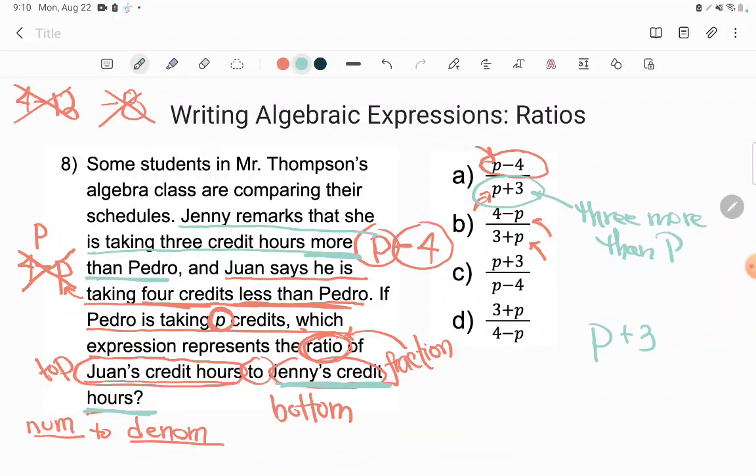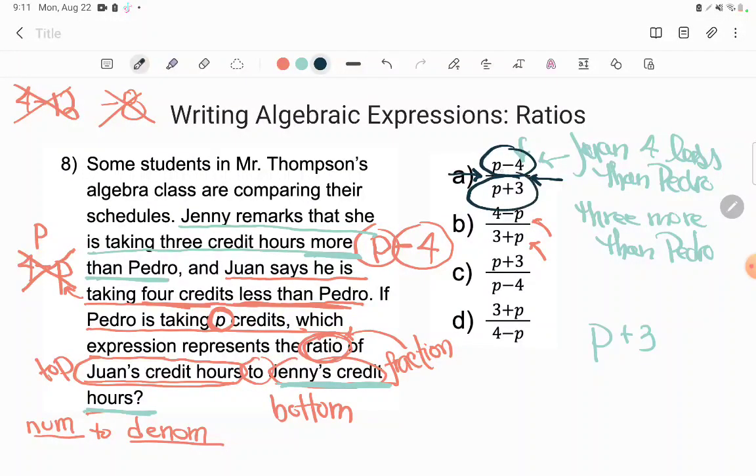And we can see there on the top in the numerator, there's Juan taking four less than Pedro. And see how I'm just reading this expression, I can read that P as Pedro. So Pedro's hours take away four gives me Juan. And Pedro's hours plus three more give me Jenny's. And so then this here is the ratio, the fraction of Juan's credit hours to Jenny's credit hours. All right, if you have any questions about this or any other GED math problem, be sure to drop it in the comments and I'll do my best to answer it.